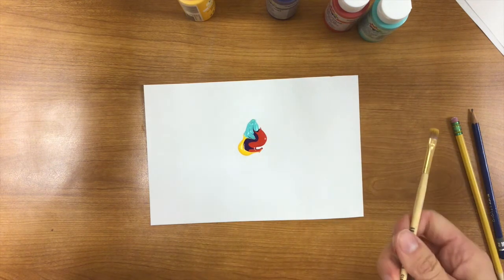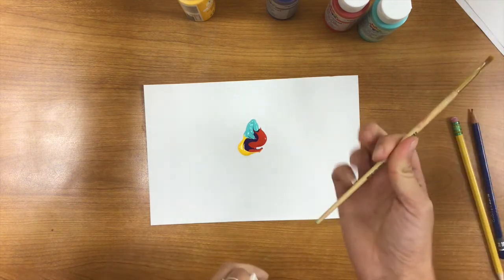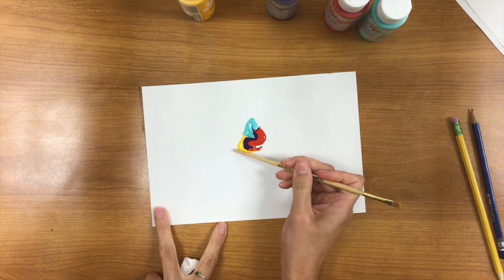You want to be really gentle when you swirl just so you don't end up blending the colors. You just want them to kind of sit in each other. But really, you can do this however you want.